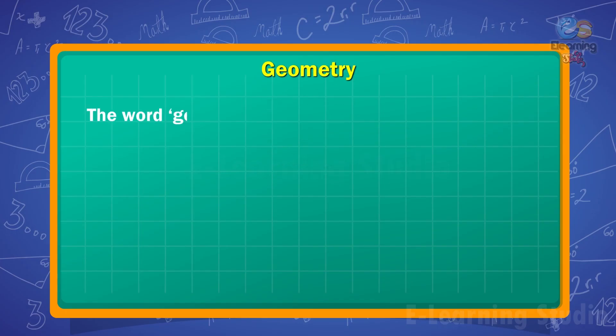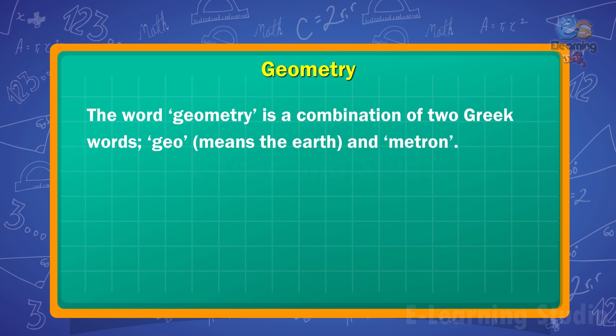Children, the word Geometry is a combination of two Greek words. Geo means the earth and Metron means measure.